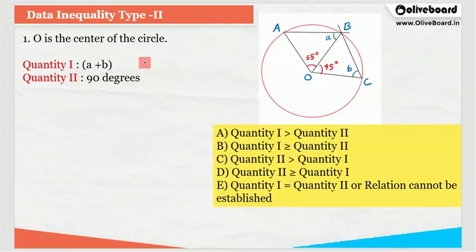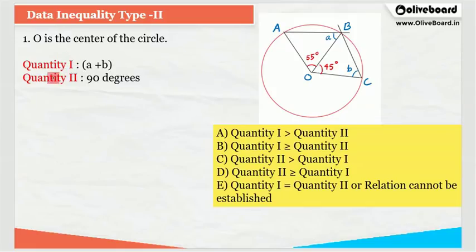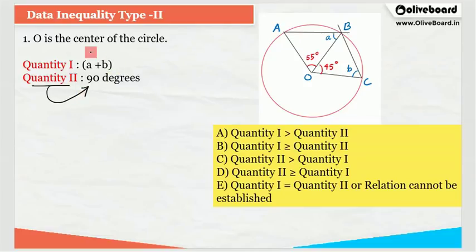I have already discussed the framework of these Data Inequality Type 2 questions. They will provide you with some certain information and after that they will define two quantities — quantity 1 and quantity 2. So I have to find quantity 1 and quantity 2 separately, but here you can see that quantity 2 is already provided as 90 degrees. So we don't have to find quantity 2; we only have to find quantity 1 and then compare these two values.